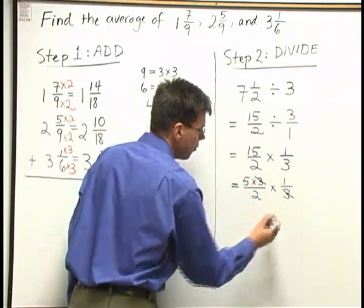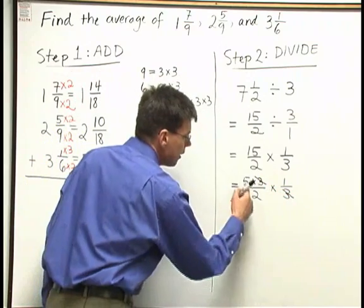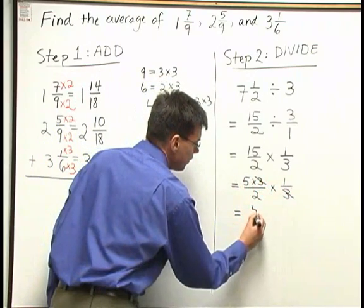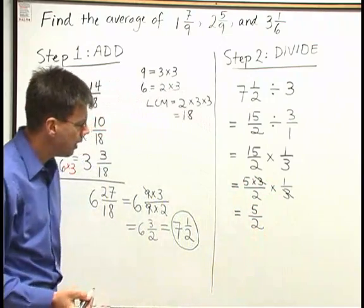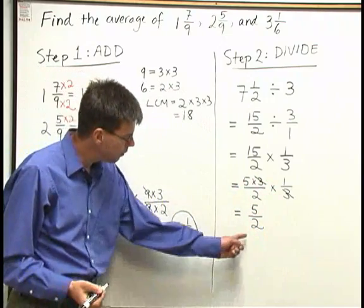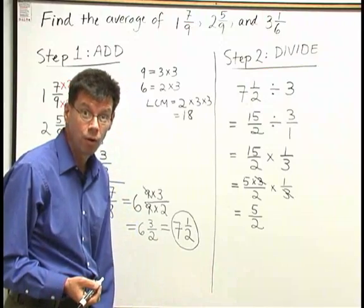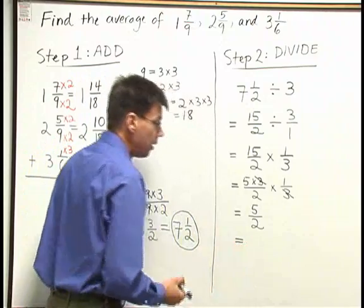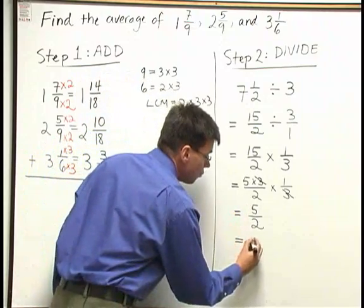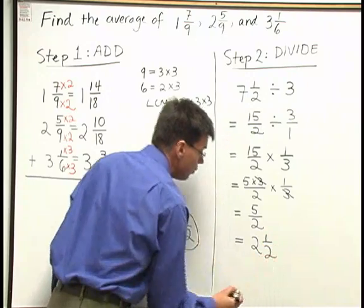I can cancel a three above and below here. So I end up with five times one is five, over two. And we're just about done. But once again, we have a fraction that's more than one whole. So we want to rewrite this as a mixed number. Two goes into five twice, with one left over. So that's two and a half.